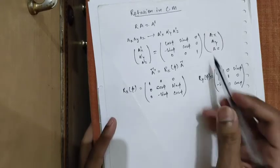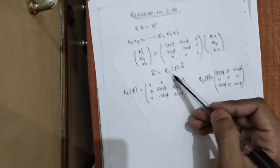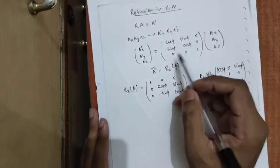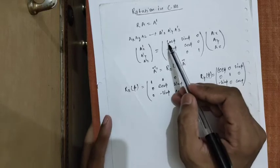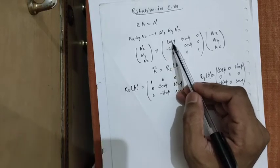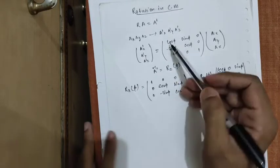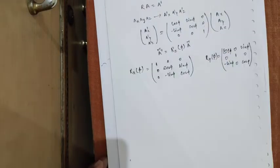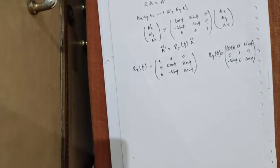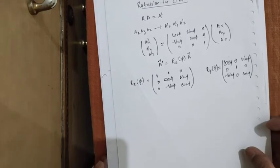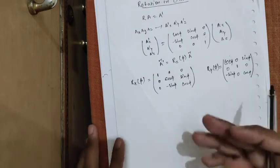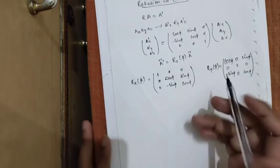An easy way to learn these rotation matrices about the x, y, and z axes is to learn the first two terms, cos and sin phi, and then differentiate them. From classical physics, we know that rotations about the same axis commute with each other, while rotations about different axes do not commute.